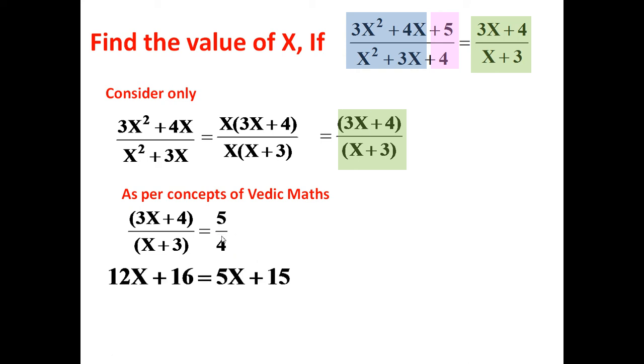Now, you can simplify it simply by cross multiplication. 12x plus 16 is equal to 5x plus 15. So, it becomes 7x is equal to minus 1 or x is equal to minus 1 by 7 answer.